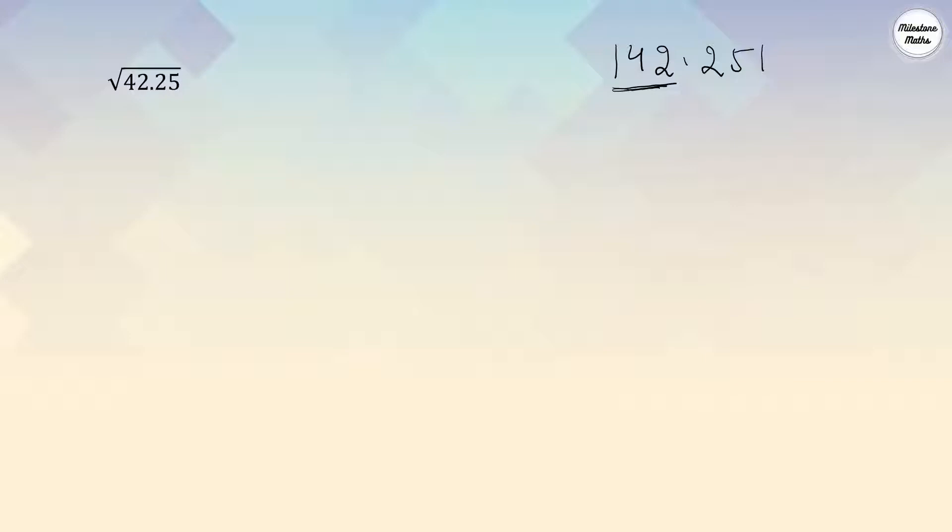Let's take an example: 42.25. Finding the square root of a decimal number is the same as finding the square root of a natural number. The only difference is in putting a bar. Suppose we have a number 142.251. This is the integral part, or whole number part, and this is the decimal part. When we put bars on the numbers, for the whole number part we start the bars from the right hand side and move towards the left.